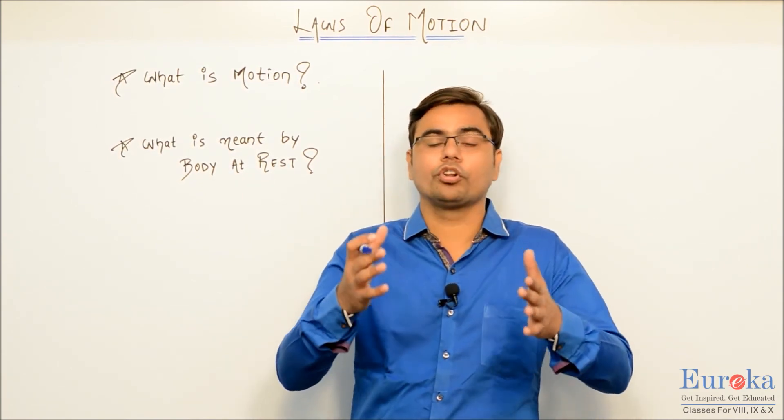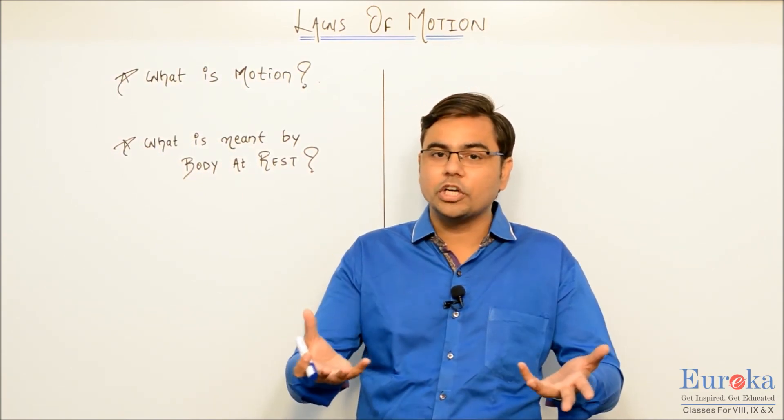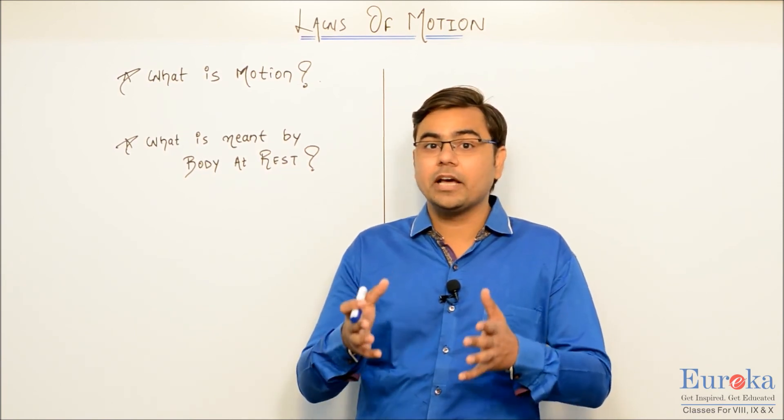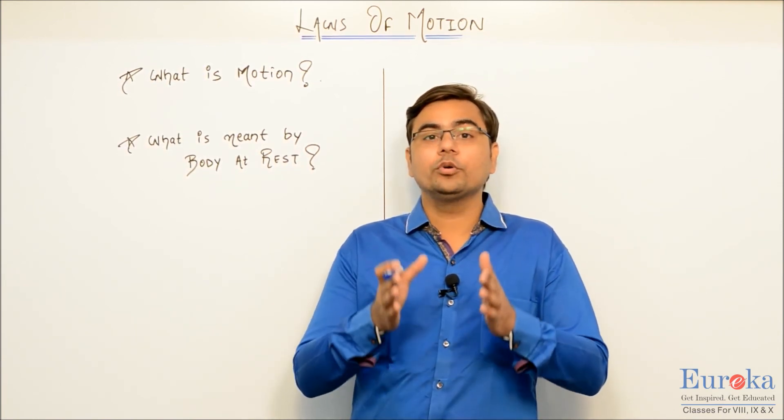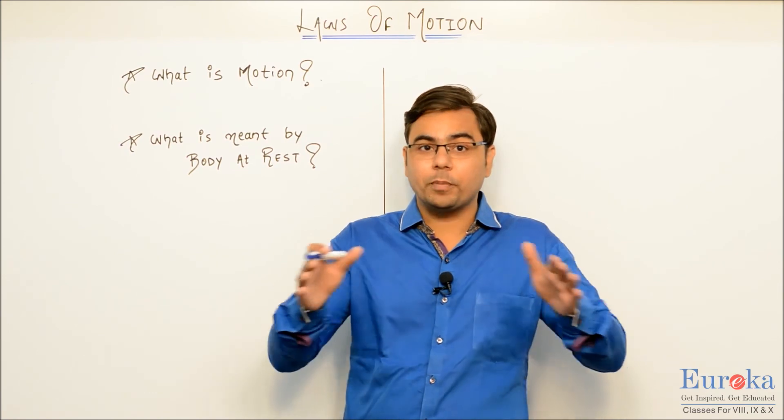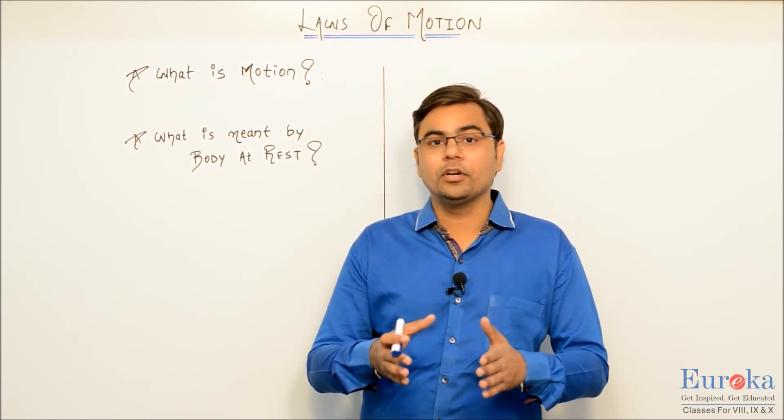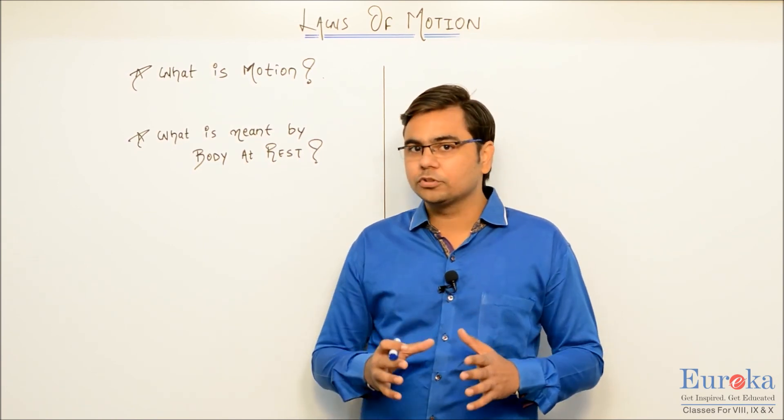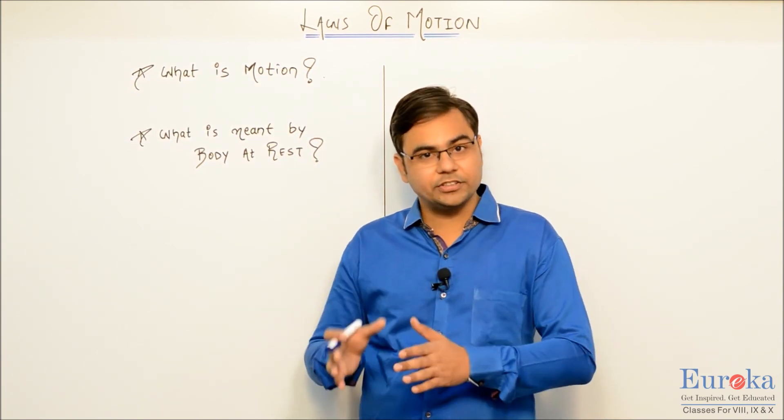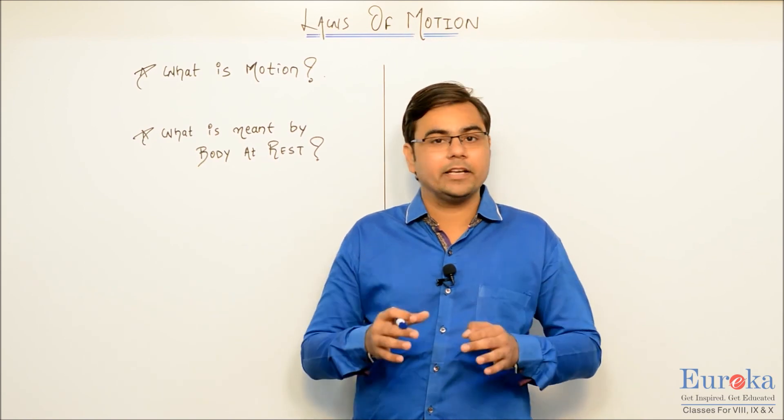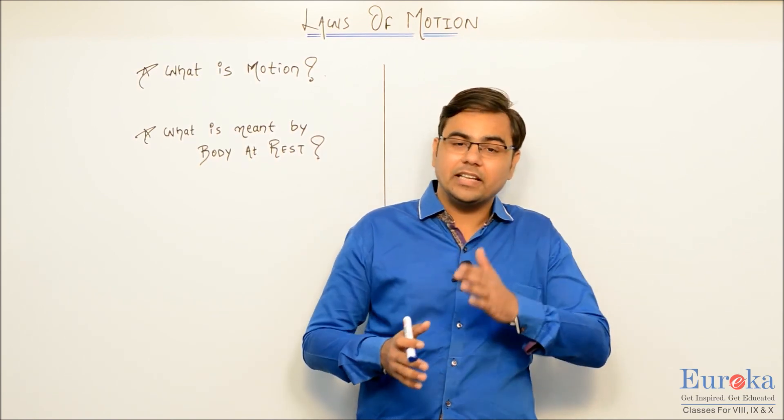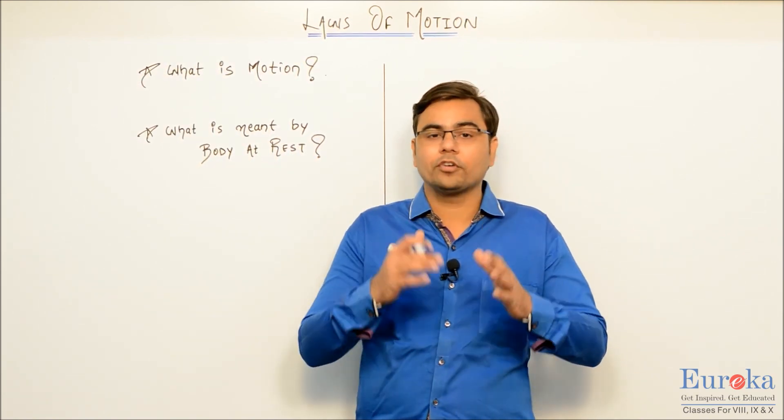A chair kept in the corner of a room is also considered to be the body at rest, because the chair by itself is not going to change its position with respect to the walls of that room. So even that can be considered to be an example of body at rest. So these two concepts, body in motion and body in rest, have to be understood deeply so that we can understand everything else which is going to form a part of this chapter.